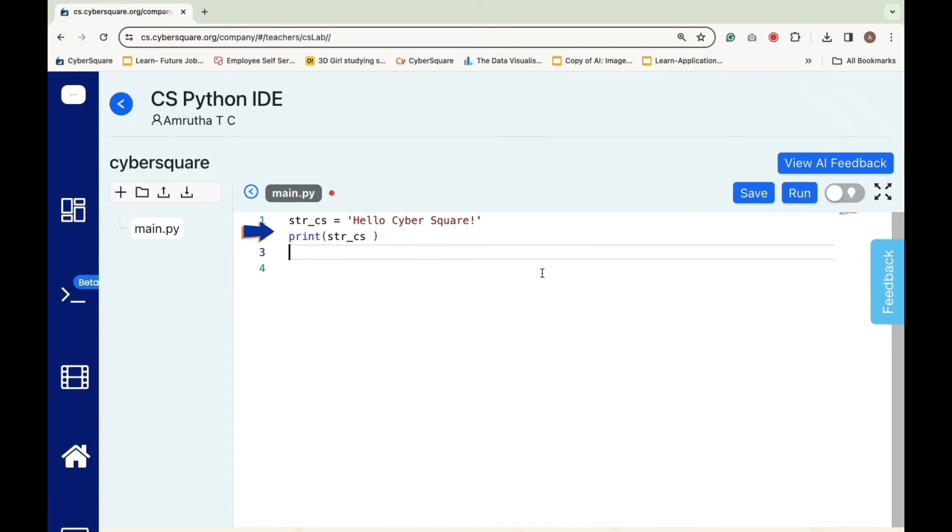Let's start by printing the string stored in the variable istr_cs. Now, click the run button.